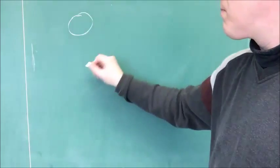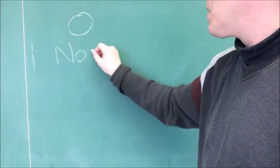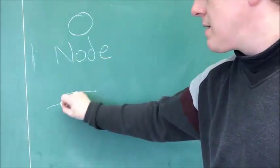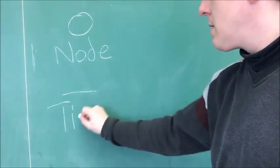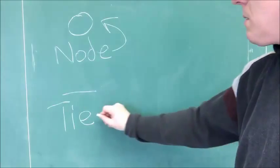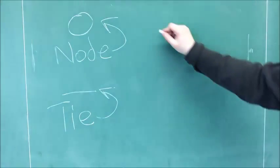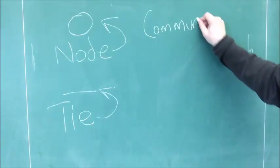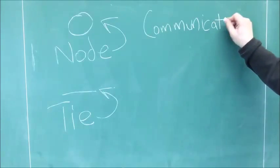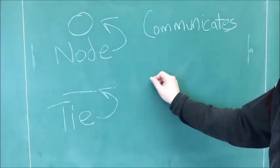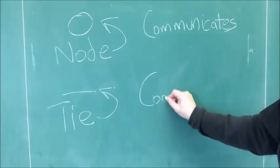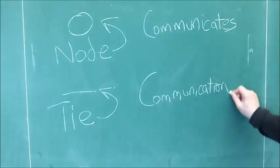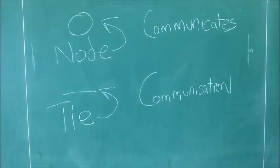Now, a social network is very simple. It consists of just two kinds of objects. One is usually drawn as a circle and is a node. The other is a line and is called a tie. At base, that's all there is to a social network. What could be simpler?